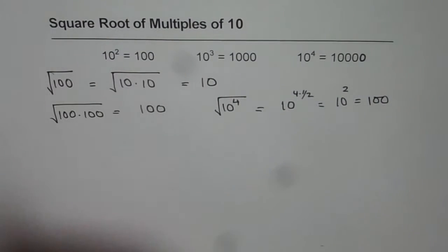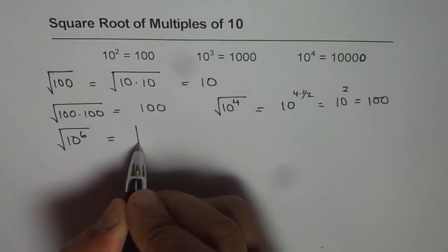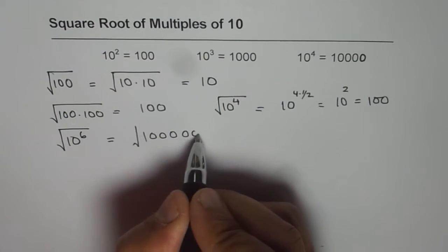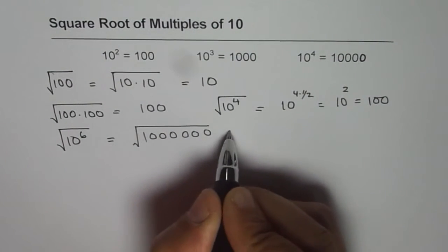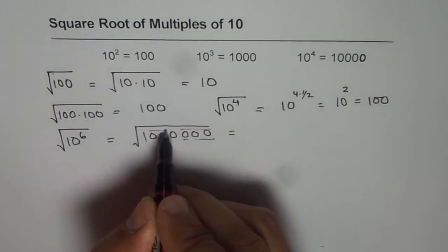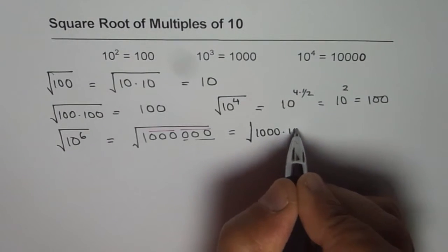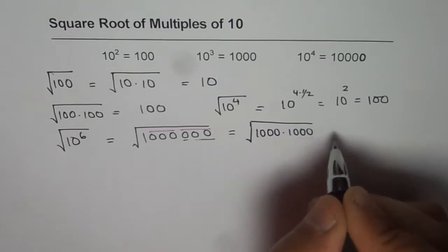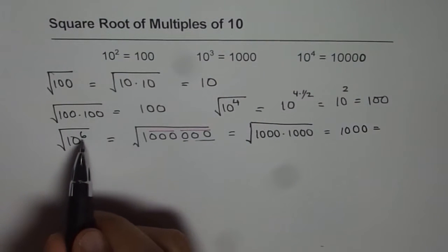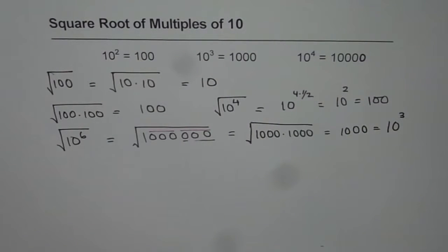Let's do a similar exercise. What is square root of 10 to the power of 6? Now 10 to the power of 6 basically means 1, 2, 3, 4, 5, 6 zeros. When you do square root, it means 1000 times 1000, which is indeed 1000. Or I could have written directly: what is half of 6? Half of 6 is 3. So we get 10 to the power of 3 as our answer.